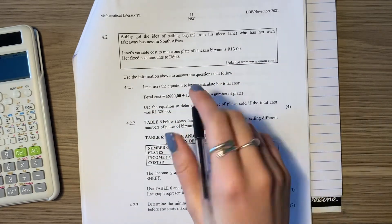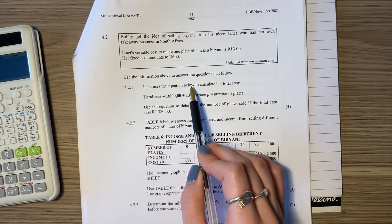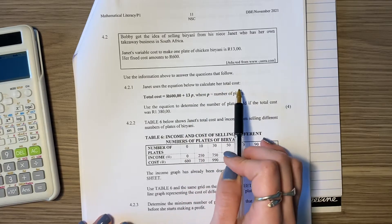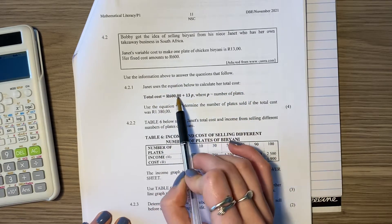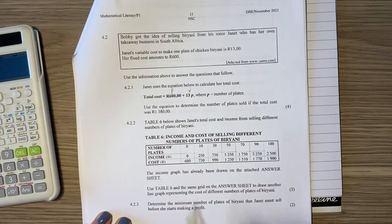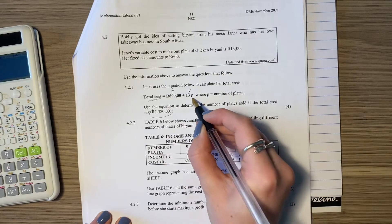Use the income above to answer the questions that follow. Janet uses the equation below to calculate her total cost. So there's her total cost, 600 rand, so that's her fixed, and there's her variable costs where p is the number of plates. Use the equation to determine the number of plates sold if the total cost was this. So they've given us this and they want you to work out p.